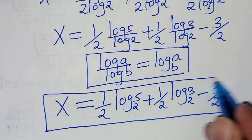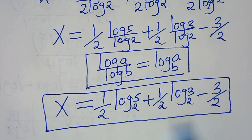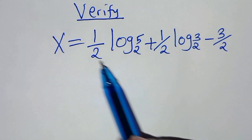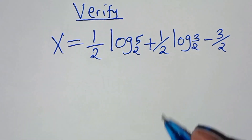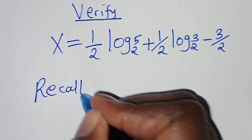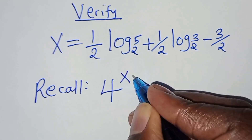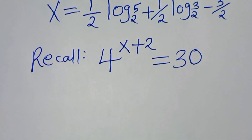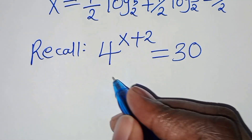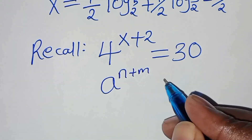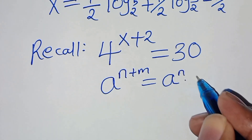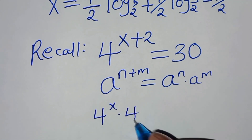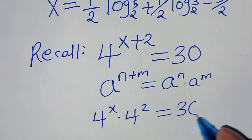Let's verify that this value of x satisfies the equation. Recall that 4 to the power x plus 2 should give us 30. Using the exponent property, we transform this to 4 to the power x times 4 squared, which equals 30. Here 4 to the power x times 16 equals 30.